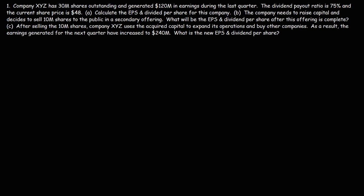Number one: company XYZ has 30 million shares outstanding and generated $120 million in earnings during the last quarter. The dividend payout ratio is currently 75% and the current share price is $48. Calculate the EPS and dividend per share for this company, and we'll also calculate the price to earnings ratio.